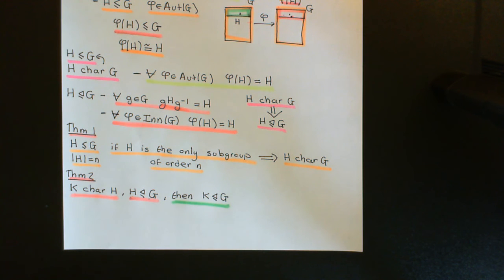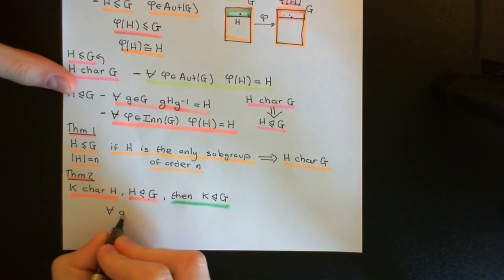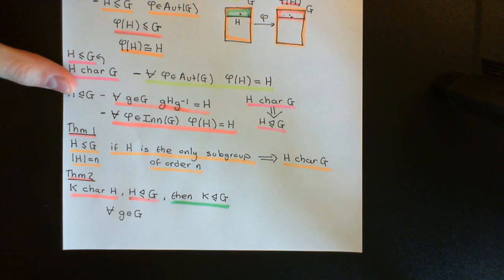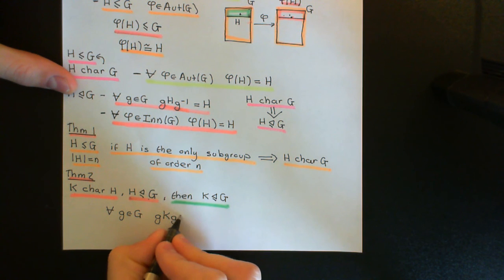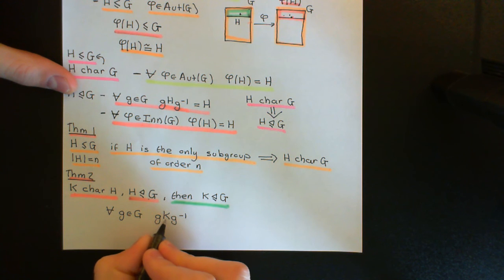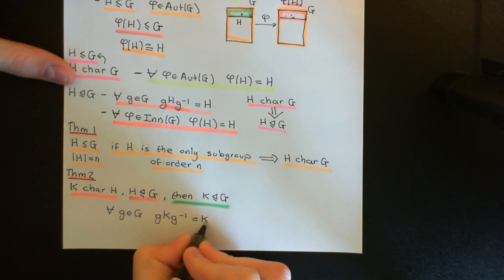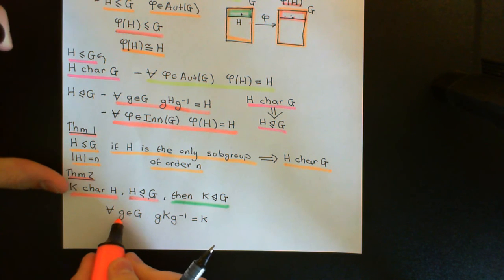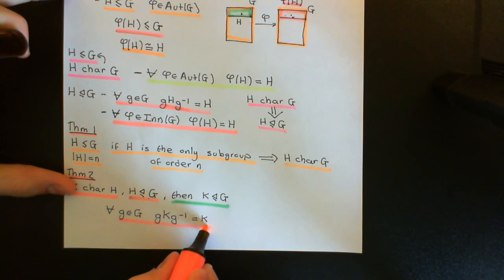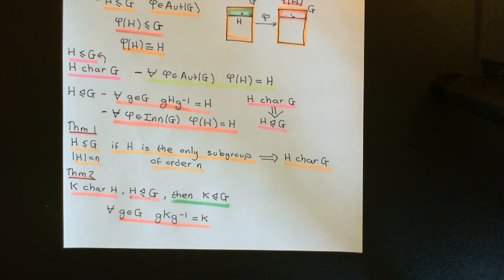Let's prove this. What we need to prove is that if you take an arbitrary element g from the group G, then conjugating K by g — that is, computing gKg⁻¹ — gives K back again. In other words, all elements of G, when used to conjugate K, fix K and keep it as the same subgroup.